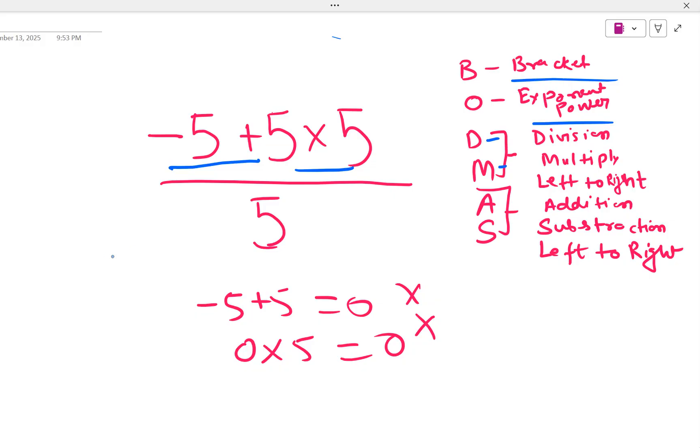So what we will do? We will have multiplication first. So let's do the multiplication first. So first, let us multiply. It is 25. Then minus 5 is there. Divided by 5.